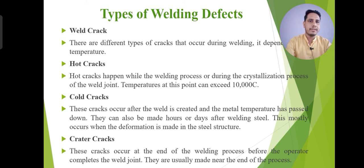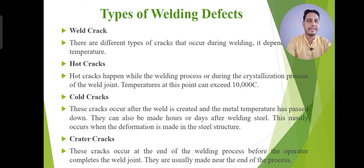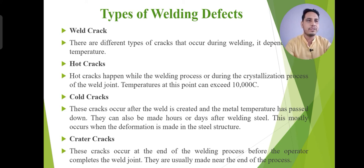Another one is crater cracks. These cracks occur at the end of the welding process before the operation completes the weld joint; they are usually formed near the end of the process. You have to keep in mind what causes hot cracks, cold cracks, and crater cracks, when they happen, and how to control them. If the cooling rate is very high, this is the main reason for cracks. The remedy is that cooling should be reduced to avoid this type of defect.